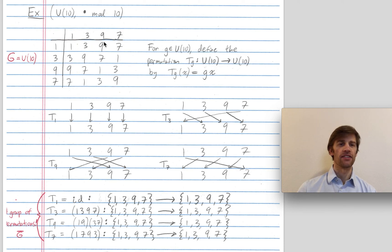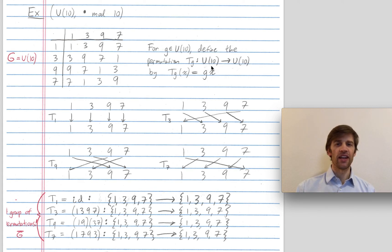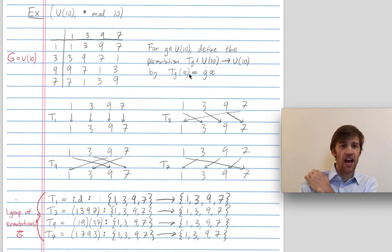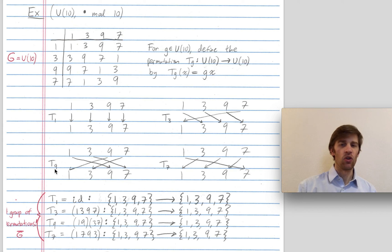You can see the multiplication table has this diagonal striped pattern to it. Now for any element g in U10 we're going to define a permutation T sub g. T sub g is going to be a permutation that permutes all the elements of U10 — it maps U10 to itself. As we've already described, T sub g of x for any input x is going to be g times x. So what is T1? It permutes the elements 1, 3, 9, and 7 just by multiplying by 1, mapping them to themselves. So this is the identity permutation.